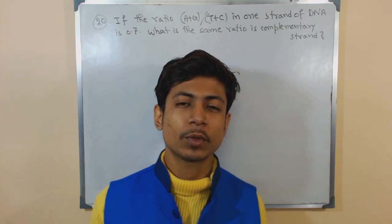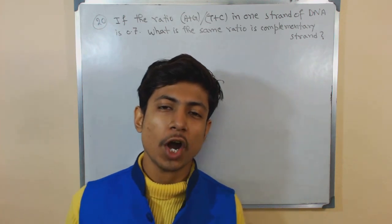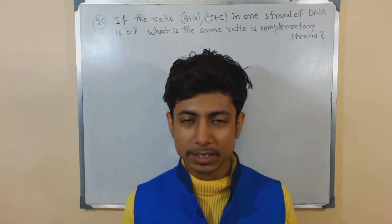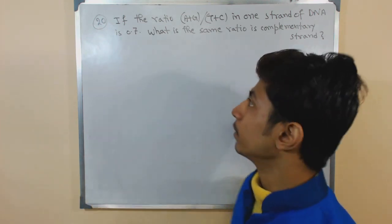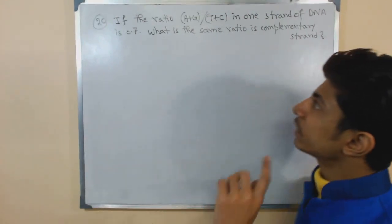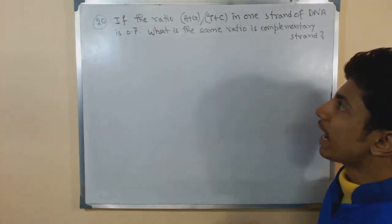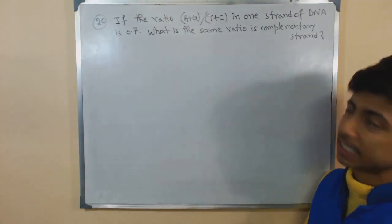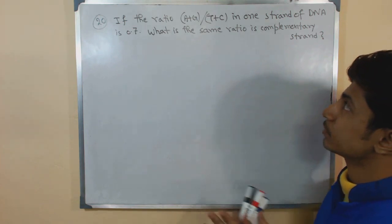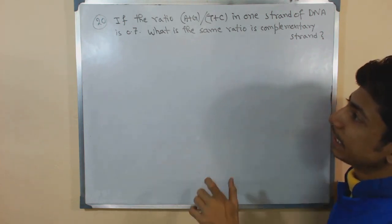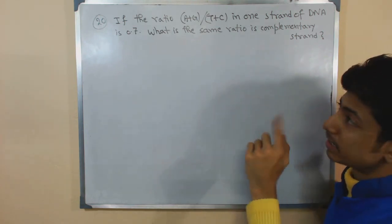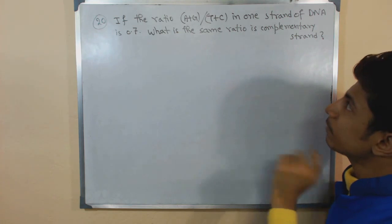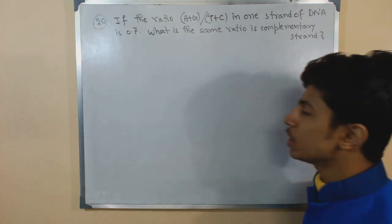Hello friend and welcome to another series of problems for biology. Let us talk about this problem: if the ratio of adenine plus guanine to thymine plus cytosine in one strand of DNA is 0.7, what is the same ratio in the complementary strand?